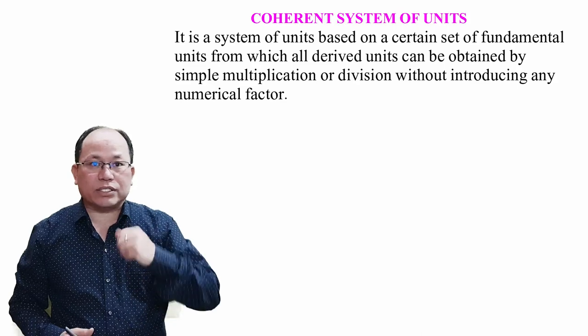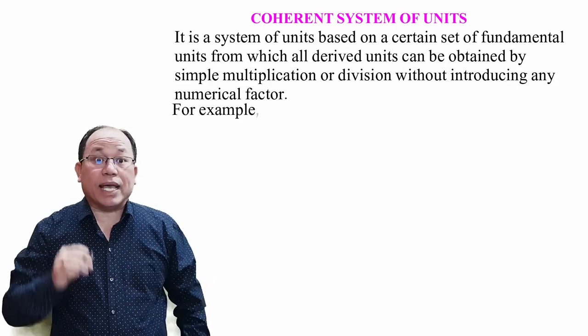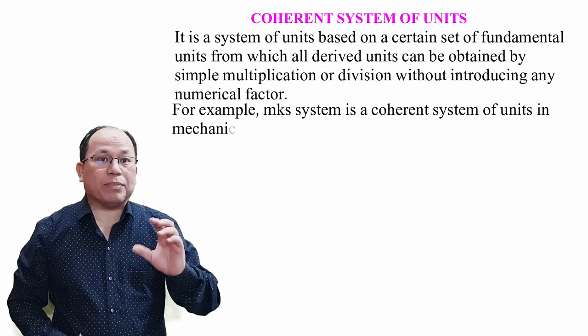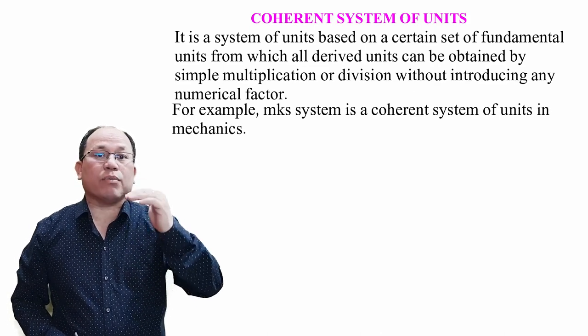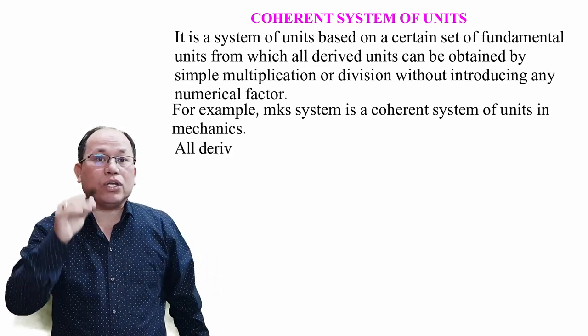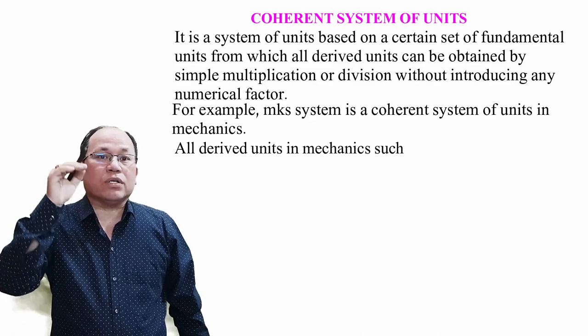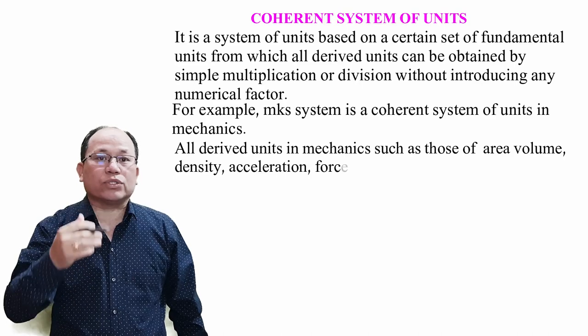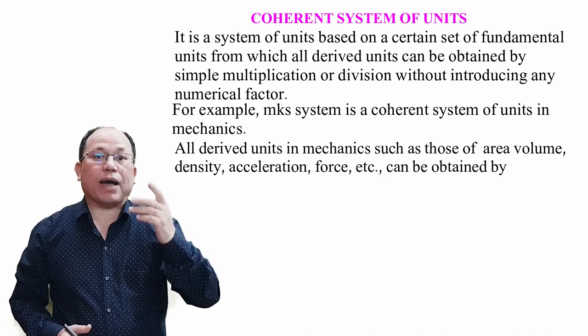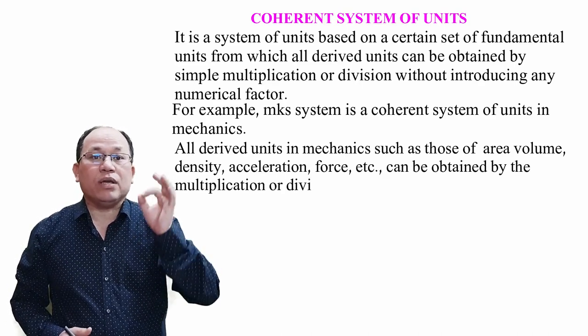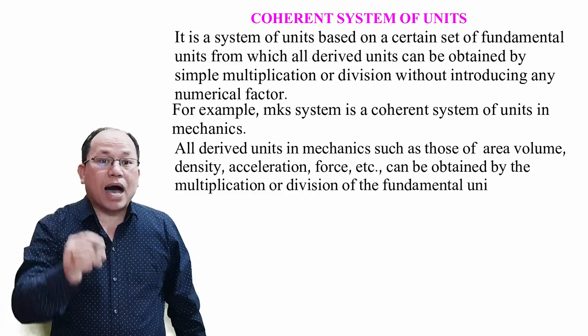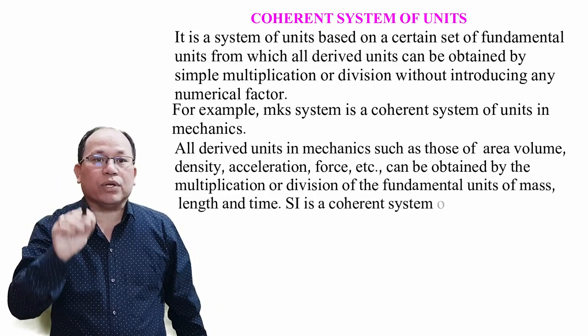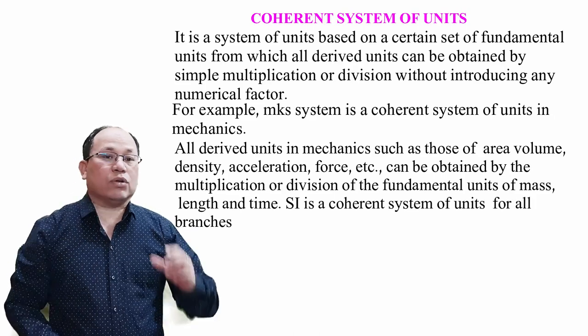Let me give the examples in the next topic. For example, MKS system is a coherent system of units in mechanics. All derived units in mechanics such as those of area, volume, density, acceleration, force etc. can be obtained by the multiplication or division of the fundamental units of mass, length and time. So SI is a coherent system of units for all branches of physics.